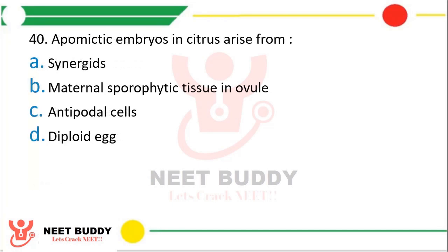Question number 40: Apomictic embryos in citrus arise from — Option A: Synergids. Option B: Maternal sporophytic tissue in ovule. Option C: Antipodal cells. Option D: Diploid egg. Apomictic embryos in citrus arise from — the correct answer is option B, maternal sporophytic tissue in ovule.